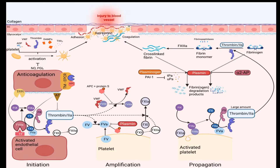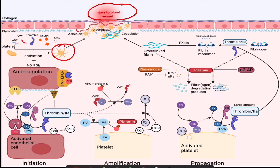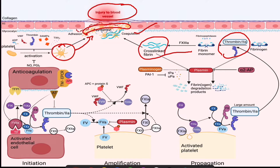The normal coagulation response initiates when the vascular endothelium is injured. This activates platelets, which adhere to the injury site, forming the initial platelet clot, and the coagulation cascade, amplified by activated platelets, leading to a thrombin burst that cleaves fibrinogen into fibrin. Fibrin monomers crosslink onto the aggregated platelets, further stabilizing clot formation.